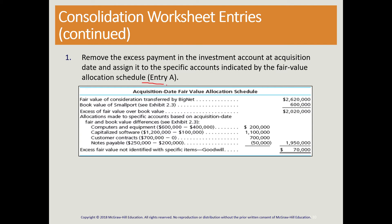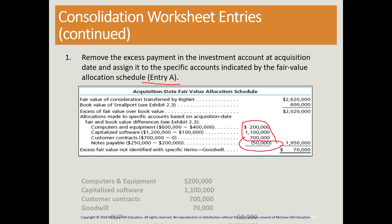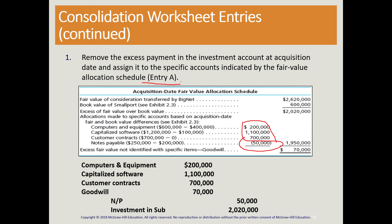Now we have entry A — A stands for assets, though it also includes liabilities. We need to reflect goodwill on the consolidated financial statements and increase the value of assets and liabilities to fair market value on the consolidated totals. The assets were undervalued and the liability was undervalued, so to increase them to fair market value we debit the assets and credit the liability. We also record goodwill on our consolidated totals.